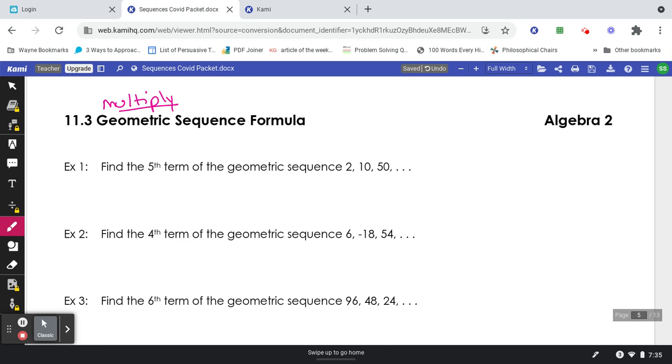Example number 1, find the fifth term of the geometric sequence 2, 10, 50. Because I know this is geometric, I can find what I'm jumping from. 2 multiplied by what gives me 10, and then 10 times what is 50. That's a multiplication of 5.